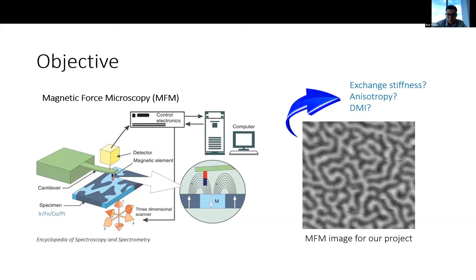Given an image of the magnetic domain here, what can we say about these magnetic parameters? Specifically, we are interested in the values of the exchange, the anisotropy, and the Dzyaloshinskii-Moriya interaction strength.